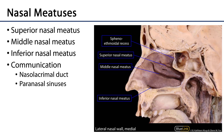If we look at the lateral wall in greater detail, we'll see that associated with every concha is a meatus. So there is the superior concha, the middle concha, and then the inferior concha, and underneath these spaces are the meatuses. So there's the superior nasal meatus, the middle nasal meatus, and the inferior nasal meatus. And then above the superior concha is a region called the sphenoethmoidal recess.